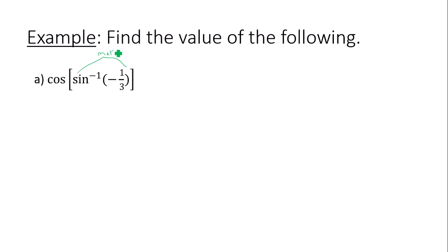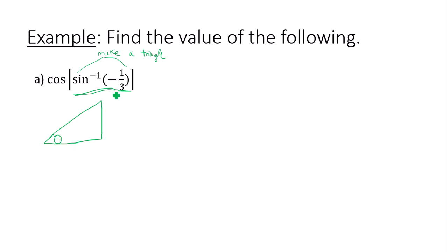Make a triangle with an angle theta, and then we'll apply cosine to that angle theta. Let's focus on the inside and make a triangle. When I make my triangle, I have an angle theta, and it's important to note that sine of theta is equal to negative one third. So one third is opposite over hypotenuse — one over three. Now I need this missing side, which I can find by using the Pythagorean theorem.